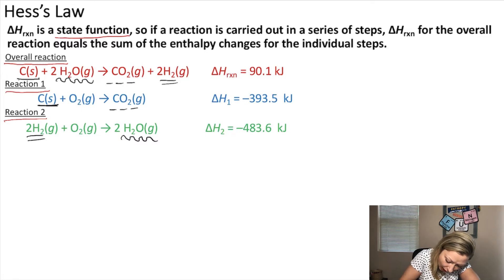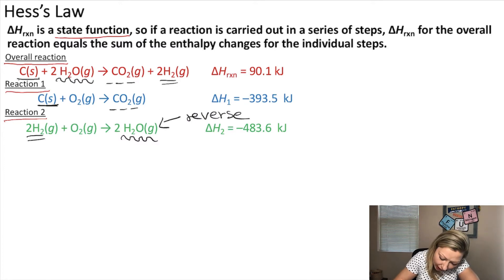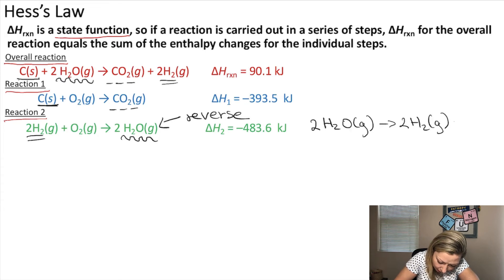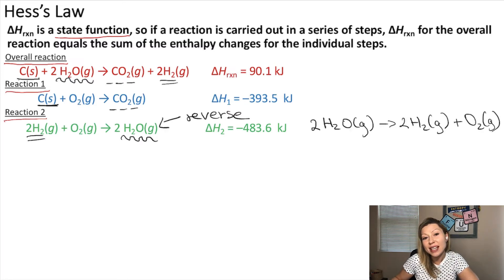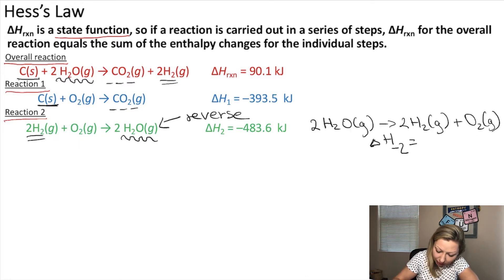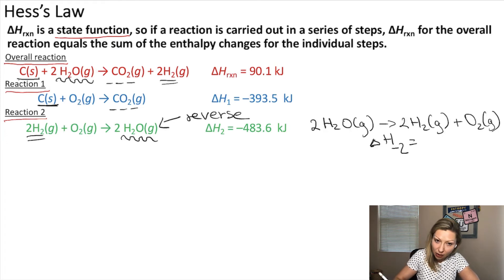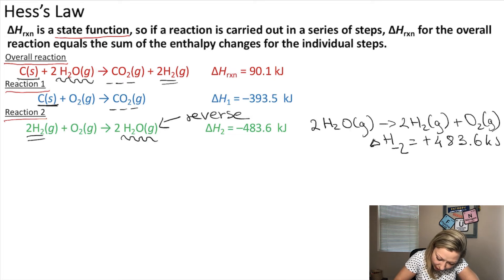If I reverse reaction two, I'm going to have two moles of H₂O gas forming two moles of H₂ gas plus O₂ gas. What is the enthalpy change associated with this reversed reaction? I'll call it delta H minus two. The enthalpy change is going to be the same in magnitude but reversed in sign. So in this case it's going to be plus 483.6 kilojoules — same in magnitude, reversed in sign.